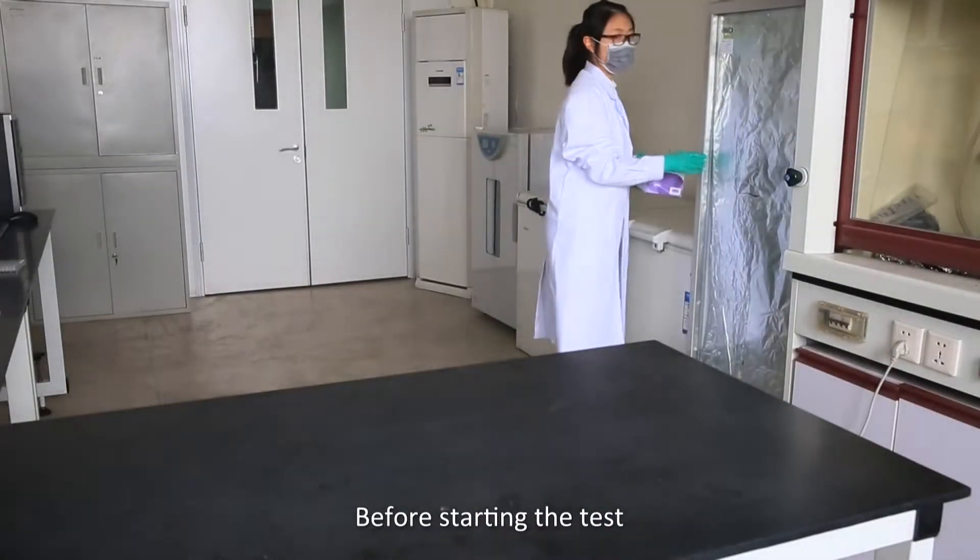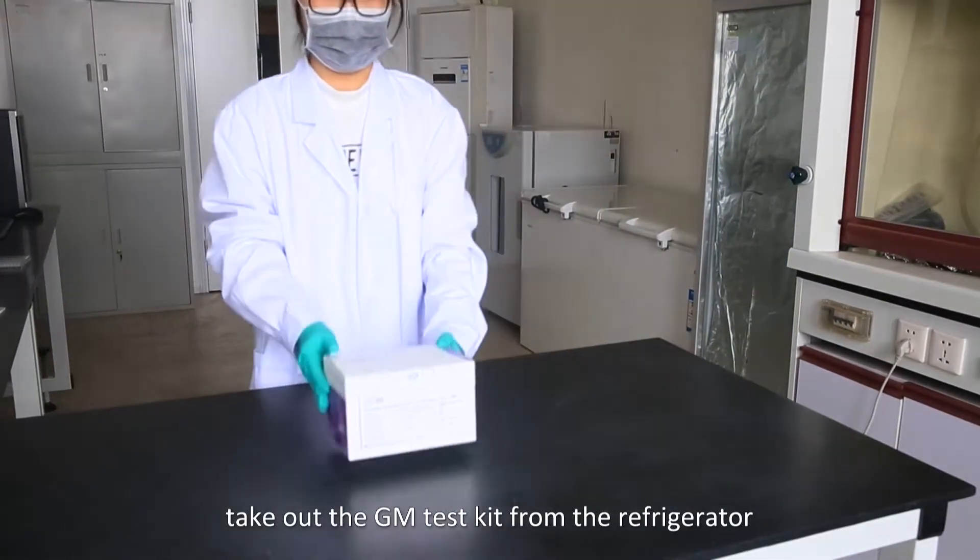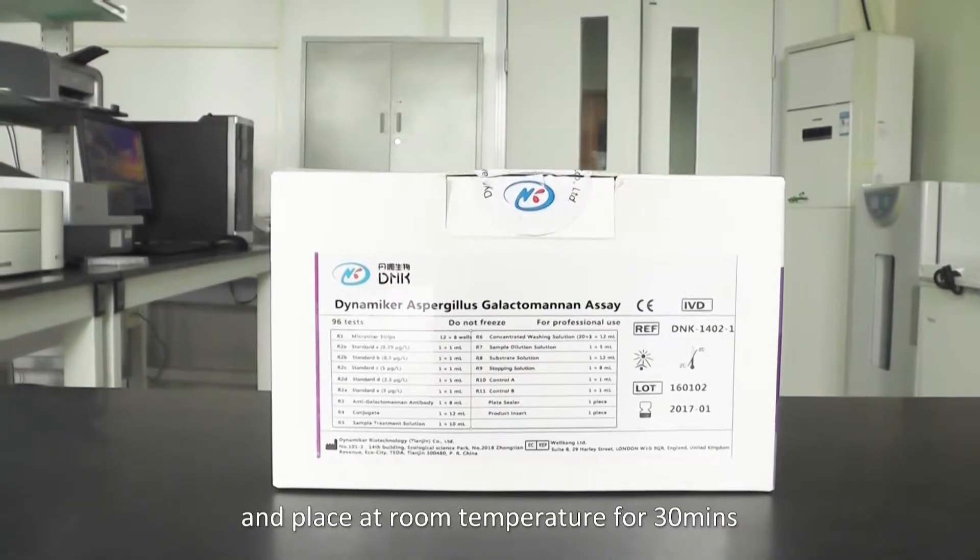Before starting the test, take out the GM test kit from the refrigerator and place at room temperature for 30 minutes.